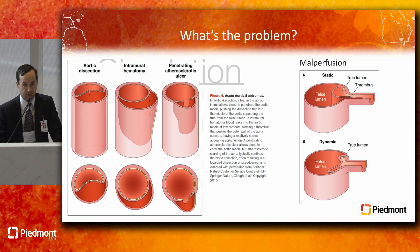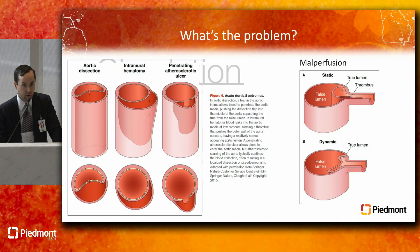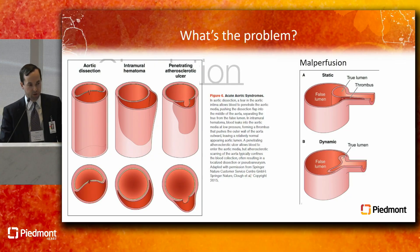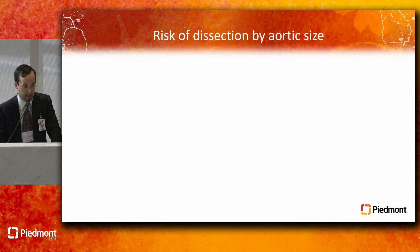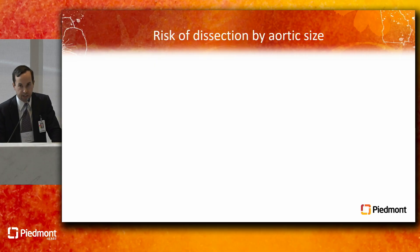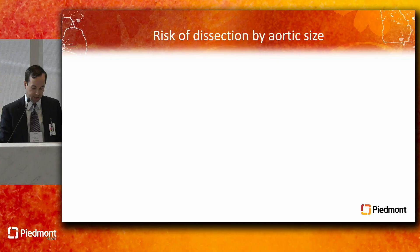Obviously if this happens in the root, which is what we're talking about today, if you get malperfusion of a coronary, you can end up dead pretty quickly. If the dissection goes up into the arch and you have malperfusion to a brain vessel, you can stroke. We think this is why maybe up to 50% of ascending aortic dissections die in the field — for example, Grant Wall at the World Cup recently. Because aortic dissection is such a catastrophe, the goal is to prevent it with prophylactic operations.